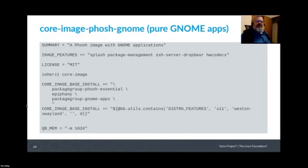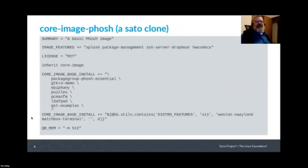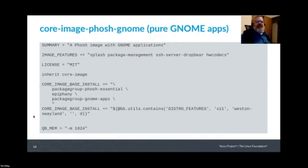We also have another more in-progress image, attempting to use pure GNOME apps — essentially what PureOS and Purism, the actual handset manufacturer, are showing. In this case we still bring in packagegroup-phosh-essential and Epiphany, but also grab packagegroup-gnome-apps from meta-gnome in the meta-openembedded layer. We use the GNOME Terminal instead of Matchbox terminal. GNOME needs a little more memory, so the QEMU QB_MEM needed to be increased.